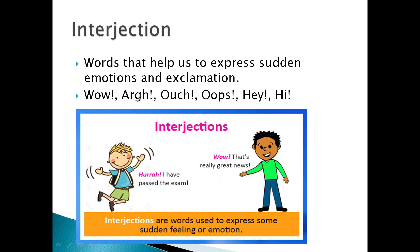The last part of speech is interjection. Interjections are words that have no real meaning, but they help us to express sudden emotions and exclamations. They can express surprise, amazement, or excitement, as well as frustration and anger. For example: 'Hurrah, we won the match!' expresses happiness. 'Ouch' expresses pain. 'Oops, I missed it' expresses regret.